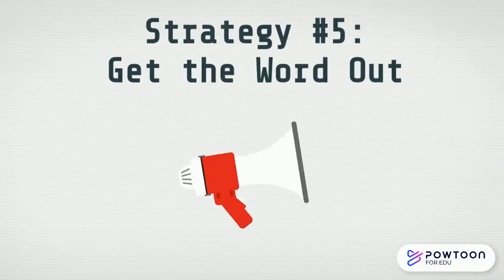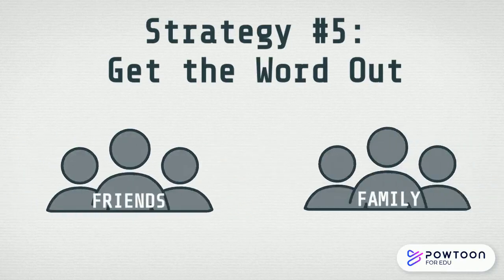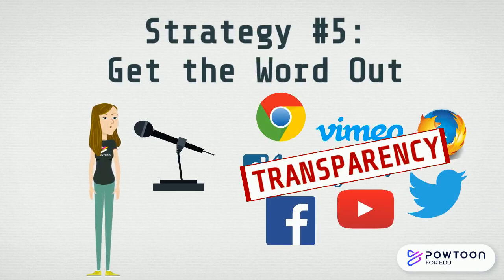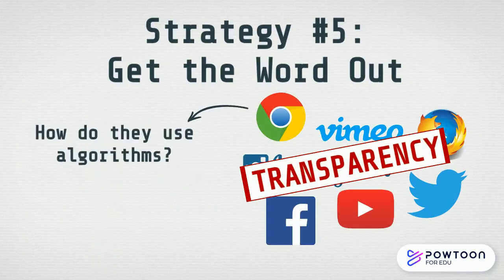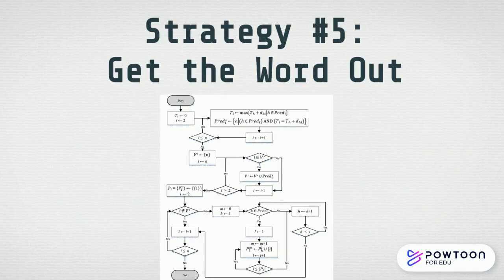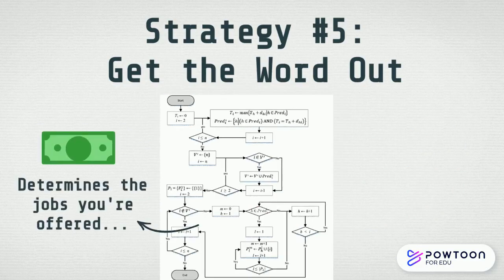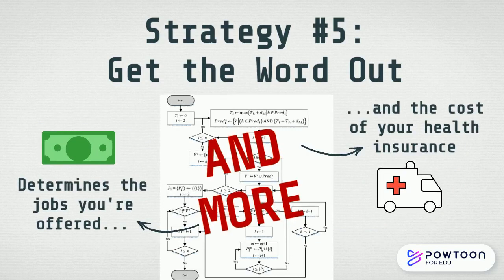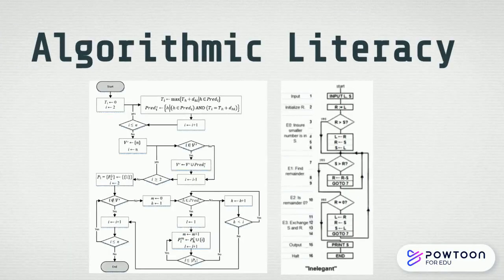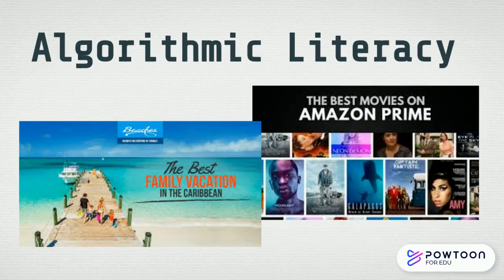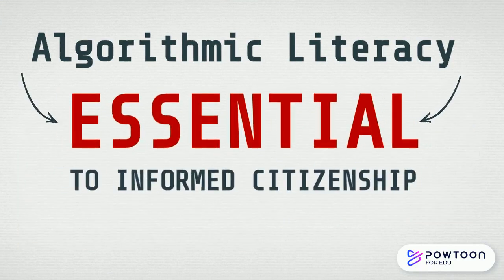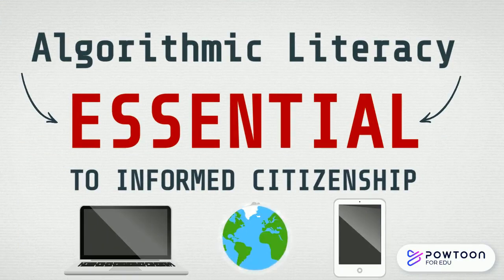Finally, get the word out. Talk with your friends and family about these issues. Advocate for companies to be transparent about how they use algorithms and how they use your data. Today, algorithms are often used to determine the jobs you're offered, the cost of your health insurance, and more — so we're talking about a lot more than just online ads. Learning about algorithms is essential to effective and informed citizenship in a high-tech information society.